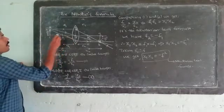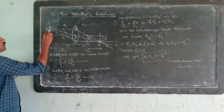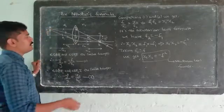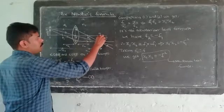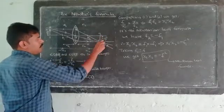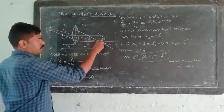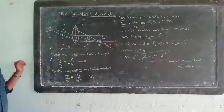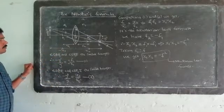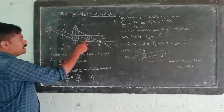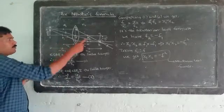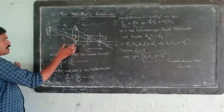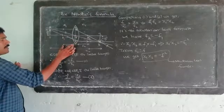Here is the point of the object with a height of y. The image is formed with a height on the axis of minus y'. Here is a convex lens. The first focus and the second focus are F1 and F2. The first focus is in the optic center, and the distance is minus F1.